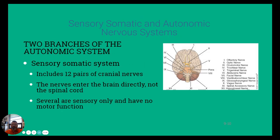The sensory somatic system includes 12 pairs of cranial nerves — there's a nice image here from the textbook with all of them labeled. They range from the olfactory nerve, which is your sense of smell, to the optic nerve, which is your vision, and so on down to the 12th. These nerves enter the brain directly and do not go to the spinal column. Several are sensory only and have no motor function at all.